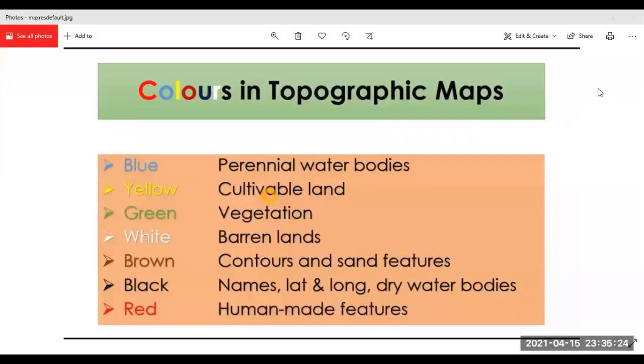Students, we had earlier studied about the topographic maps. So here we will discuss the colors used in topographic maps. Blue color is used to show perennial water bodies. Yellow for cultivable land. Green shows the vegetation. White, barren lands. Brown, contours and sand features. Black color for names, latitudes and longitudes, dry water bodies. And finally, the red color is used for human made features.